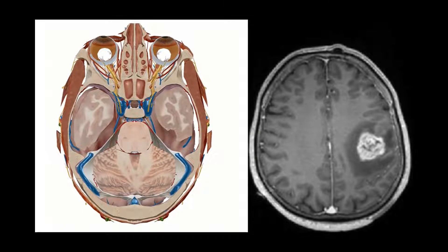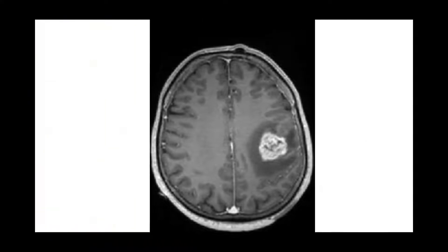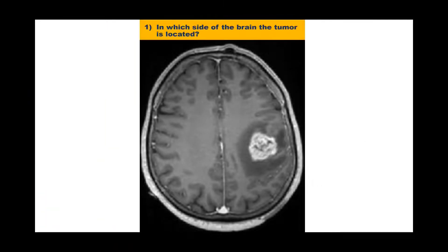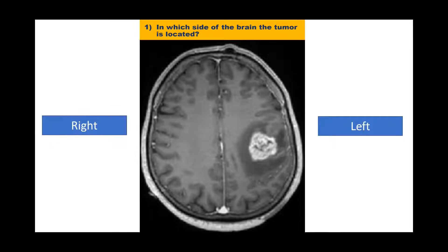Now, we can see in our CT scan and answer the first question. In which side of the brain is the tumor located? Now, it's easy to say that it is on the left side.